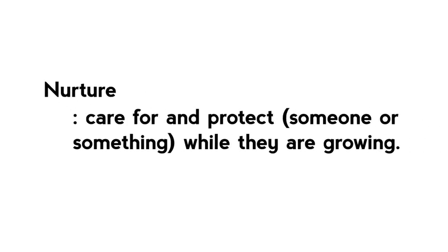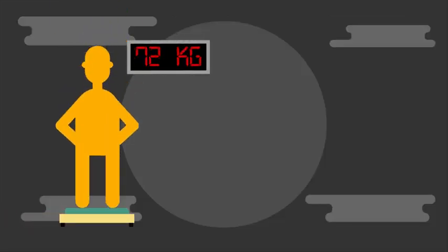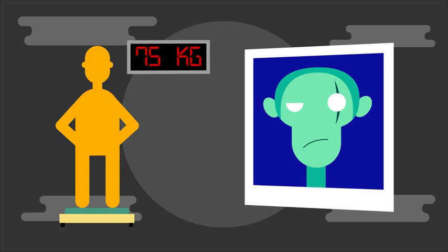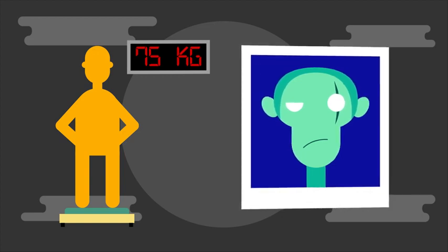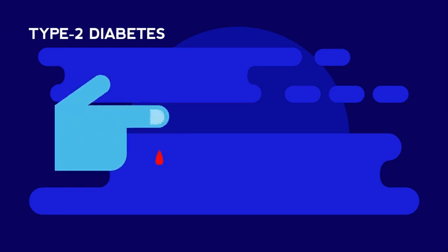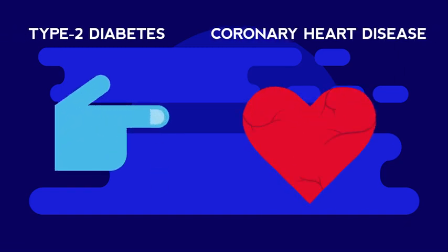Nurture refers to the effect of the environment on characteristics. The word literally means care. Examples of characteristics that are determined by the environment are weight or mass, which is dependent on your diet or the presence of a scar. Some diseases may be caused by environmental influences, such as type 2 diabetes or coronary heart disease.